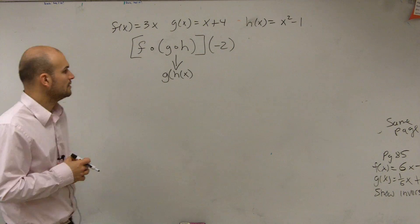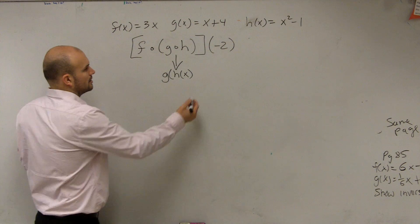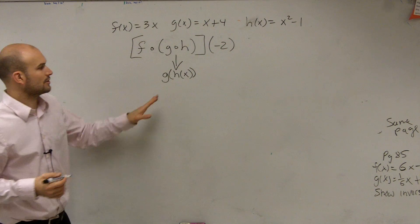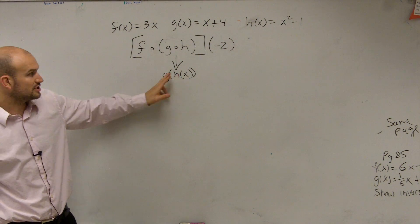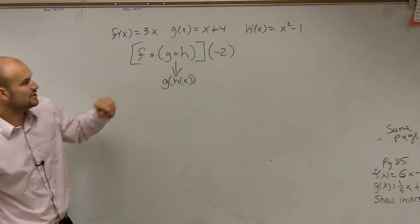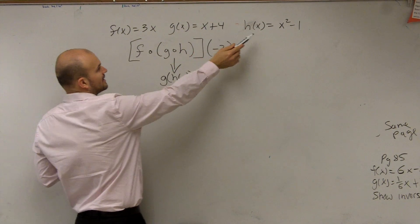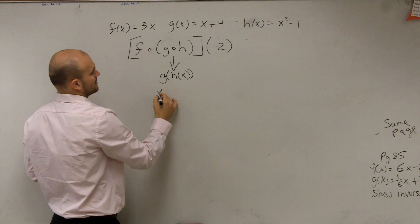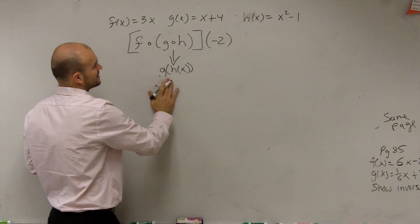Alright, so what we're going to do then is plug the h of x function into my g of x function. Well, my g of x function is x plus 4, so when I plug in h of x, I'm going to have x squared. Well, let's just write it like this.